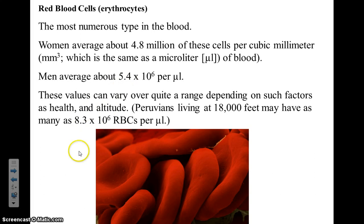Men average about five and a half million. And depending upon your activity level, or sometimes the altitude at which you live, you can have up to eight million of these cells in a cubic millimeter.